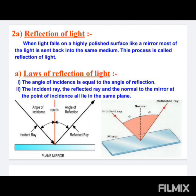Reflection of light is defined as the bouncing back of light — just as a ball thrown on a wall bounces back, light bounces back from the surface of an object. Some of it is absorbed and the rest is bounced back, depending on the nature of the object. For example, the still surface of water, oil-polished furniture, shiny metal surfaces, and polished surfaces are smooth and can turn back the ray of light in the same medium, thus acting as a mirror.